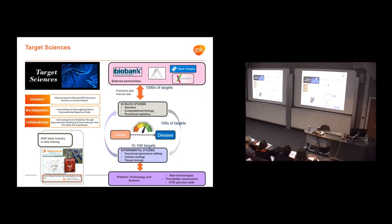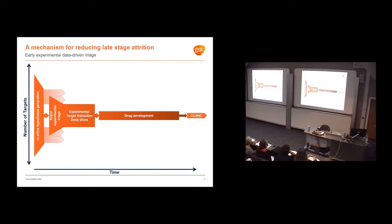We have support from platform groups for high throughput screening and genome-wide CRISPR screens. We also have close interactions with therapy areas who provide expertise on specific indications. We have a huge number of targets from in silico hypothesis generation, with emphasis in the experimental lab to rapidly triage these targets using experimental data, proving that these gene disease linkages could actually be therapeutic targets.